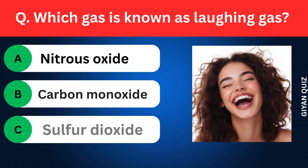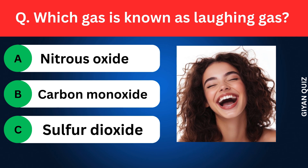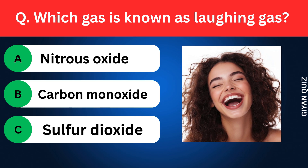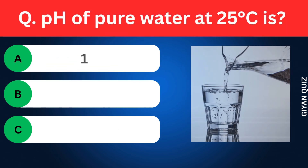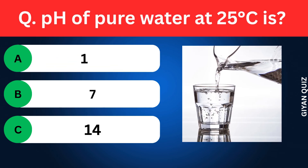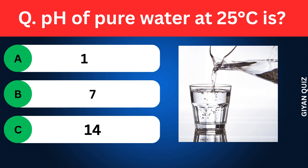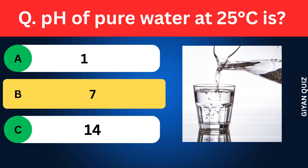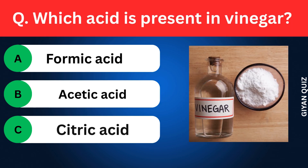Which gas is known as laughing gas? Options: Nitrous oxide, Carbon monoxide, Sulfur dioxide. Correct answer: nitrous oxide. pH of pure water at 25 degrees Celsius is? Options: 1, 7, 14. Correct answer: 7.